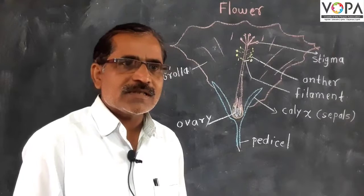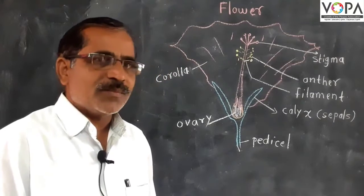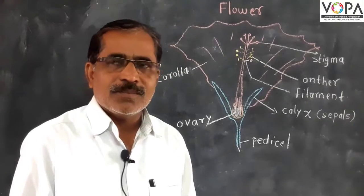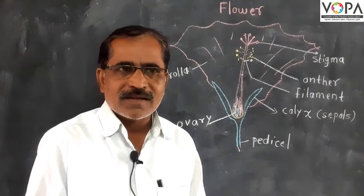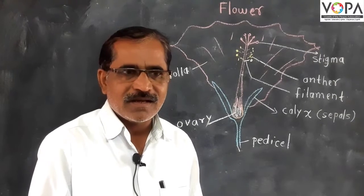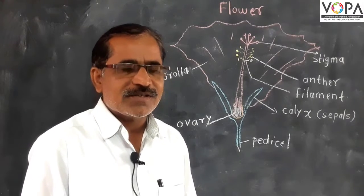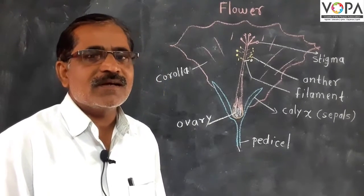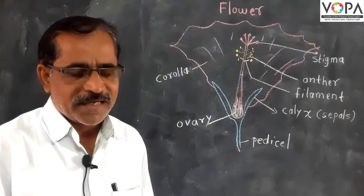We are going to learn the parts of flower. There are calyx, corolla, androecium, and gynoecium — these are the parts of the flower.